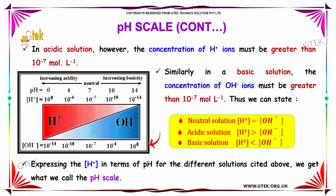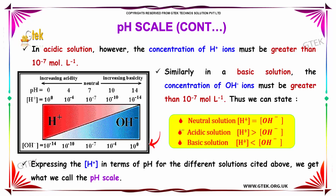In an acidic solution, the concentration of H+ ions must be greater than 10^-7. Similarly, in a basic solution, the concentration of OH- ions must be greater than 10^-7. Thus, in a neutral solution the H+ concentration equals the OH- concentration. In an acidic solution, H+ concentration is greater than OH- concentration, and in a basic solution it is vice versa. Expressing H+ in terms of pH for these different solutions gives us what we call the pH scale.